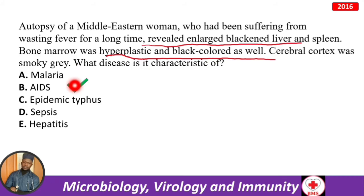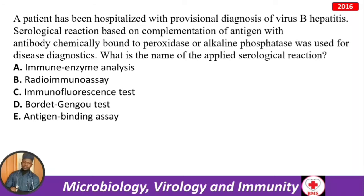A patient hospitalized with provisional diagnosis of viral hepatitis B — serological reaction based on complementation of antigen with antibody chemically bound to peroxidase or alkaline phosphatase (enzymes) was used. The name of the serological reaction is immune enzyme analysis (ELISA). Note: the hepatitis B vaccine antigen is a surface antigen obtained by a genetic recombinant method.